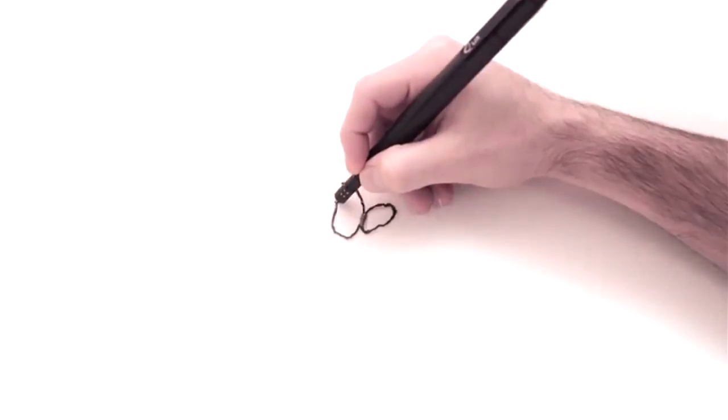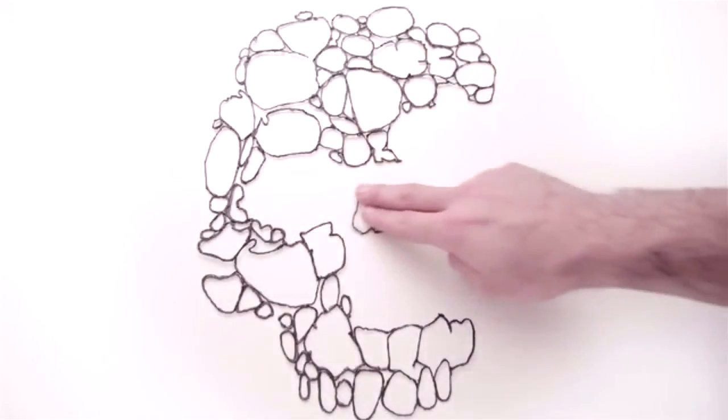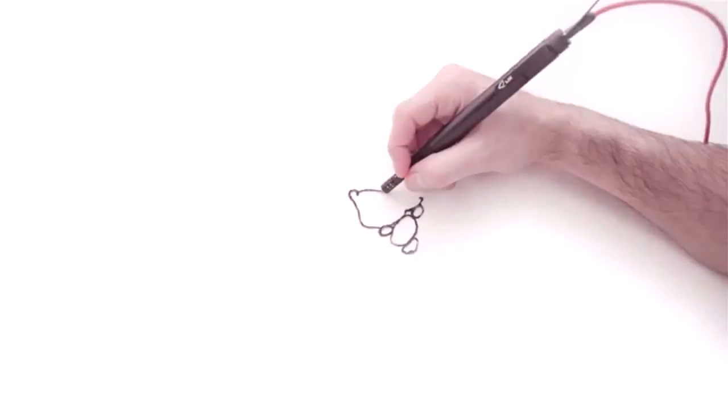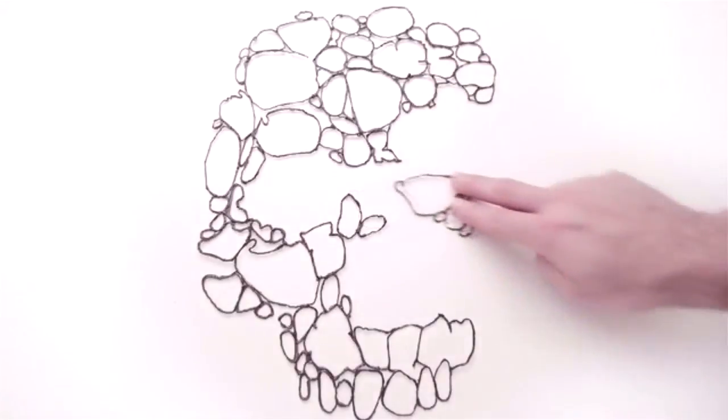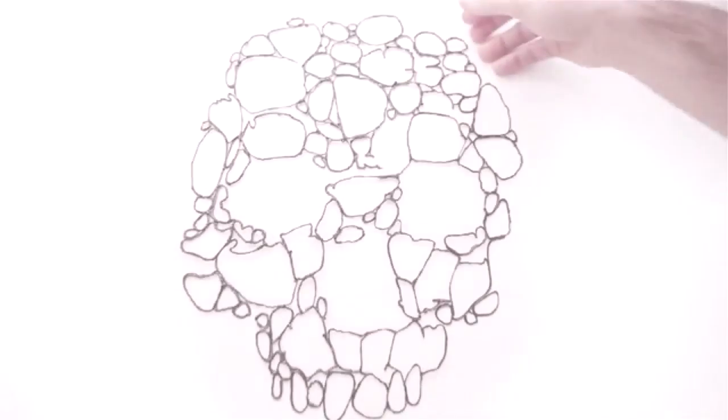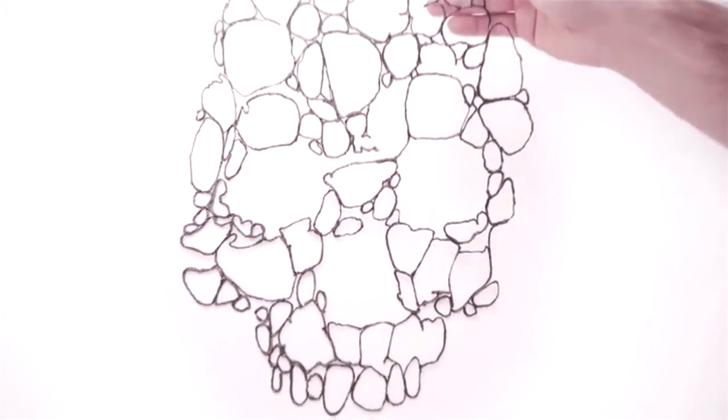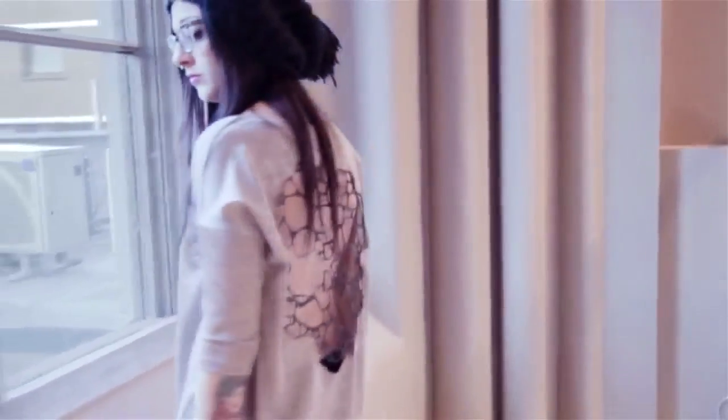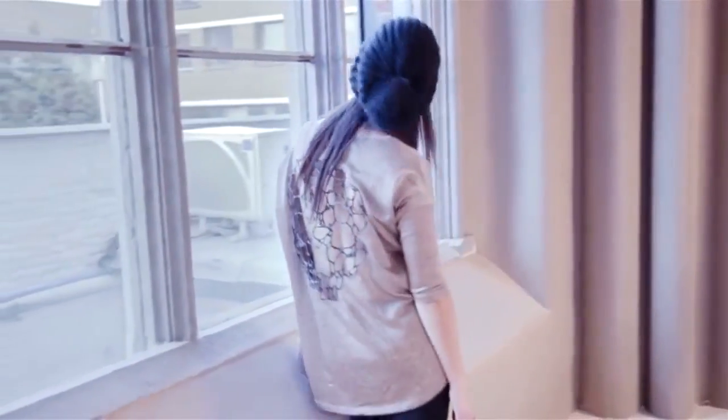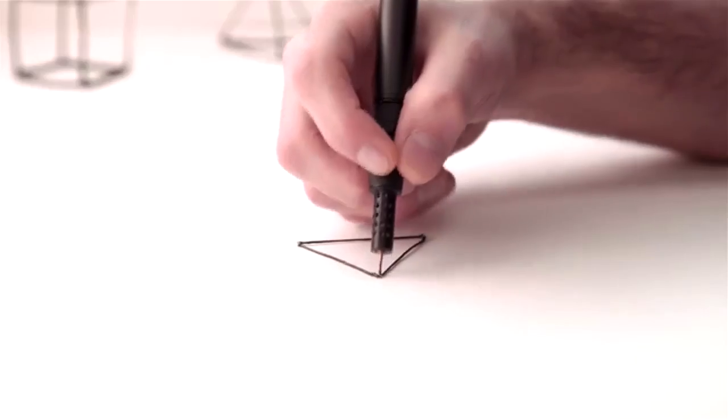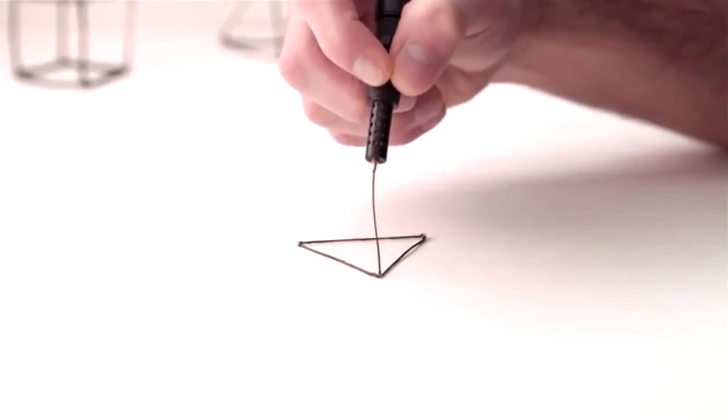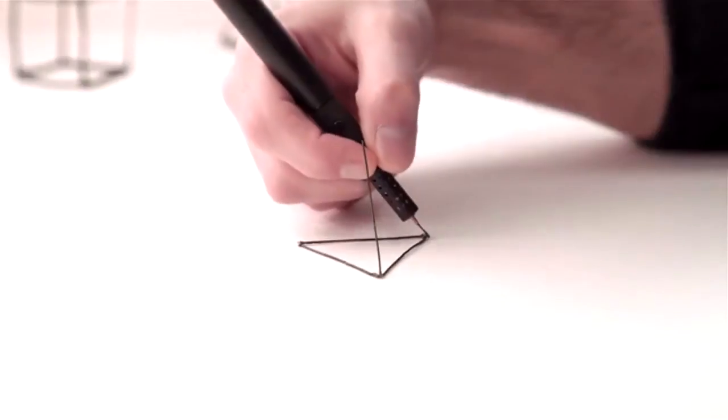Essentially, LIX 3D printing pen has the similar function as of 3D printers. It melts and cools colored plastic, letting you create rigid and freestanding structures, which can be formed in any imaginable shapes.